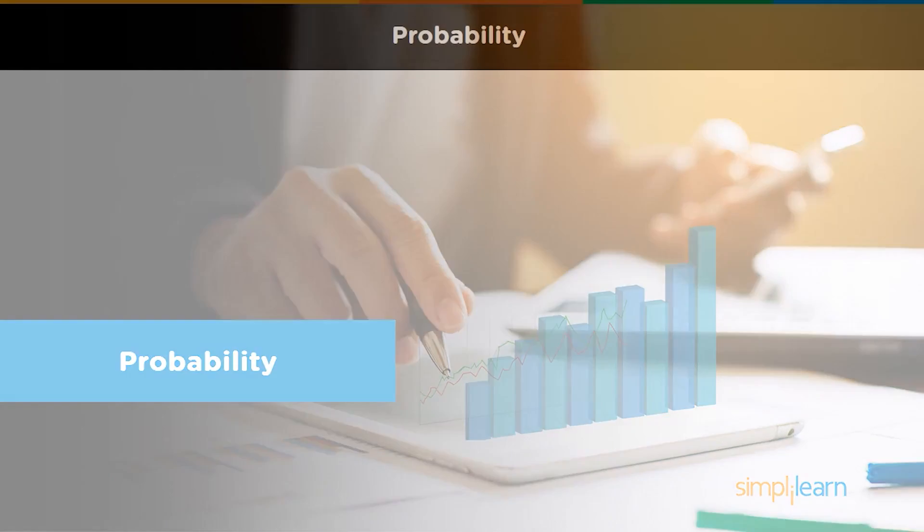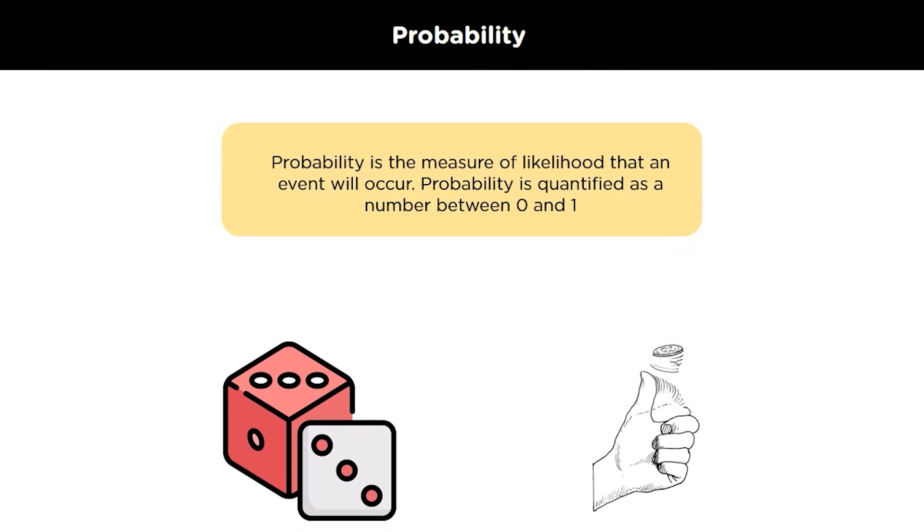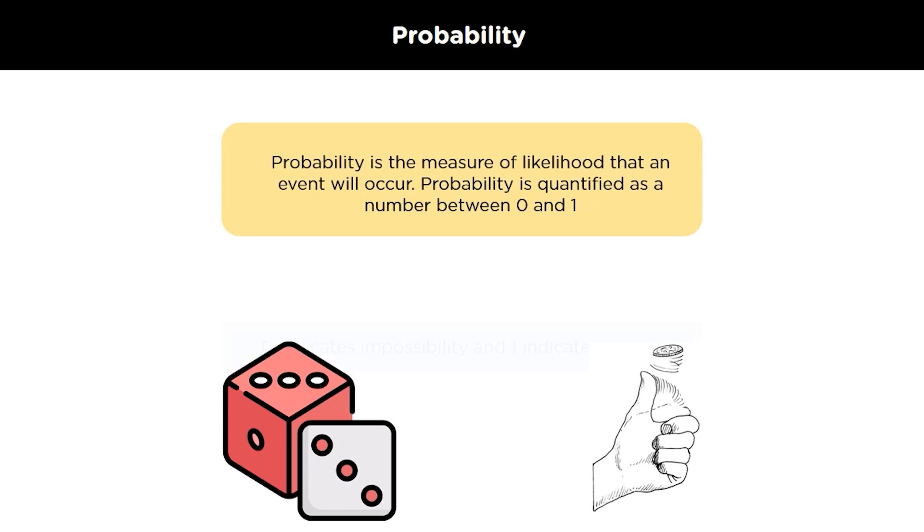What is probability? Probability is the branch of mathematics concerning numerical descriptions of how likely an event is to occur or how likely it is that a proposition is true. The probability of an event is a number between 0 and 1, where roughly speaking 0 indicates the impossibility of the event and 1 indicates certainty. The higher the probability of an event, the more likely is that the event will occur.